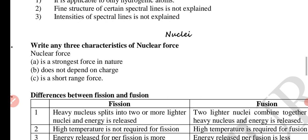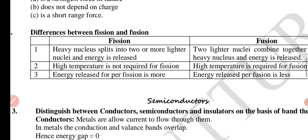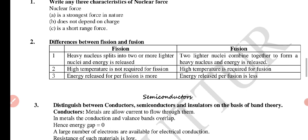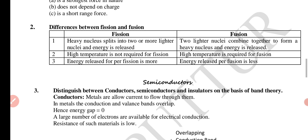Nuclei chapter. Any three characteristics of nuclear force: it is the strongest force in nature, it doesn't depend on charge, it is a short range force. Distinguish between fission and fusion. Nuclear fission and nuclear fusion: heavy nucleus splits into two or more lighter nuclei and energy is released versus two lighter nuclei combine to form heavy nucleus. High temperature is not required for fission but fusion requires high temperature. Energy is released per fission is more, energy is released per fusion is lesser. Example of fission is uranium, in fusion hydrogen is converted into helium.